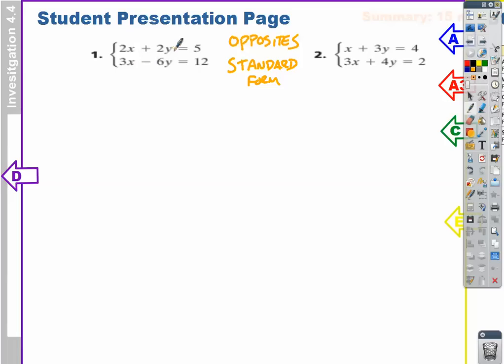We have 2y. What's the opposite of 2y? Negative 2y. What's the opposite of negative 6y? Positive 6y. Do I have opposites? No. So why would I talk about solving using multiplication and addition if I don't have opposites? That's right. This is the multiplication and addition method. I can multiply something to get opposites.